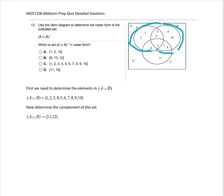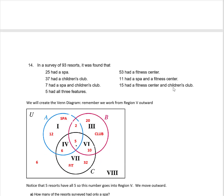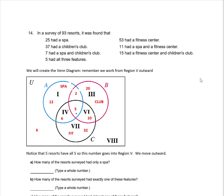For question 14, I need to create the Venn diagram. In a survey of 93 resorts, there's a list of attributes those resorts had. When filling out the Venn diagram, we always go into region five first. It tells us five had all three features, so I put that into region five. Then working outward: seven had a spa and a child's club, but with five already in region five, two goes into region two. I continue filling in regions one through seven, then add those numbers and subtract from 93 to find six resorts have none of these features.